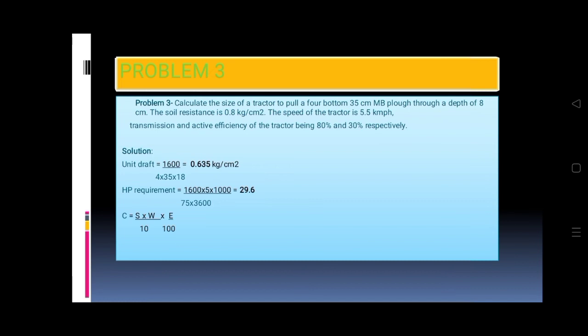Transmission and tractive efficiency of the tractor being 80 percent and 30 percent respectively. Solution: Unit drop equals 1,600 divided by 4 times 35 times 8 equals 0.635 kilogram per centimeter squared.